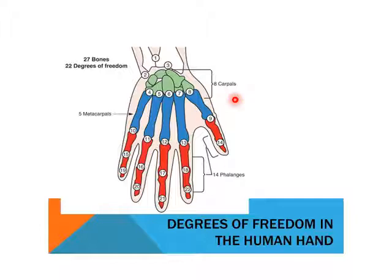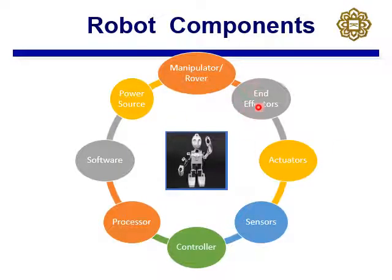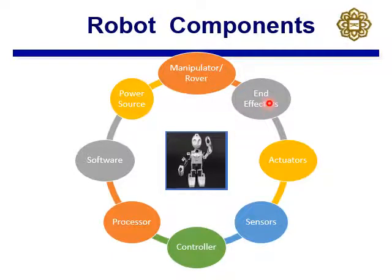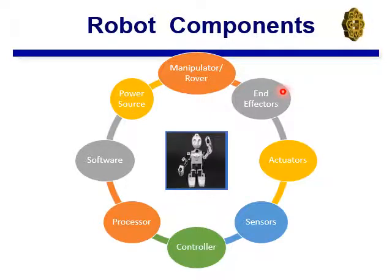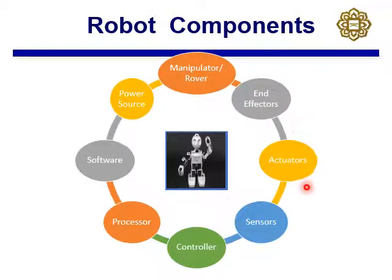Now, these are the major components for any robotic system. First, you need a manipulator — the links, joints, and base. At the end of the manipulator, you have the end effector: the tool attached to the endpoint of your manipulator. This end effector can be a simple gripper, a welding tool, a paintbrush — anything can be an end effector.